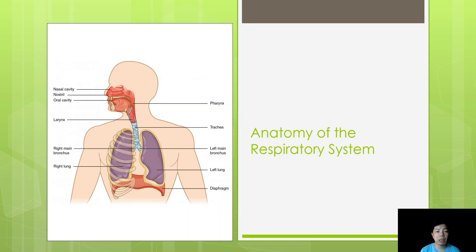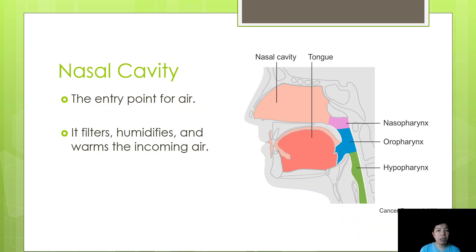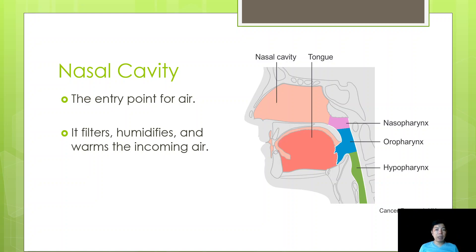Starting with the nasal cavity, which includes the nose and the nostrils — this is considered to be the entry point for air in the respiratory system. The primary functions of the nasal cavity are filtration, humidification, and warming of incoming air. For filtration, the nostrils consist of cilia — the tiny hairs inside — that trap dust particles and pollens. If anything gets past, the nasal cavity has a mucosal lining that also traps foreign objects.